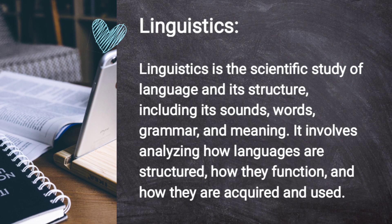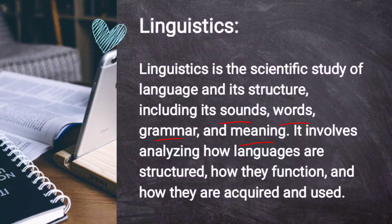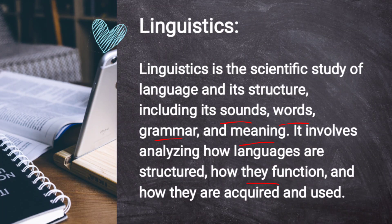Every language — Chinese, Urdu, Hindi, Spanish, English, French — has its own structure, its own sounds, and its own grammar. In linguistics, we analyze how languages are structured, how they function, how they are acquired, and how they are used. For example, how English is used, how it is acquired, how it functions, and how it is structured — as in subject + verb + object.